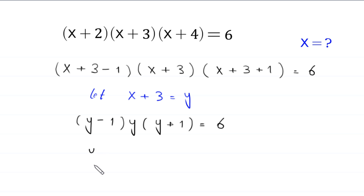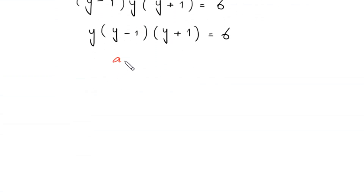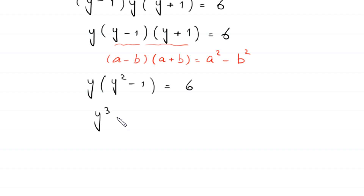We rearrange these terms: y·(y-1)·(y+1) = 6. Using the algebraic identity (a-b)(a+b) = a²-b², this becomes y·(y²-1) = 6. Distributing: y³ - y = 6. Moving 6 to the left-hand side gives y³ - y - 6 = 0.